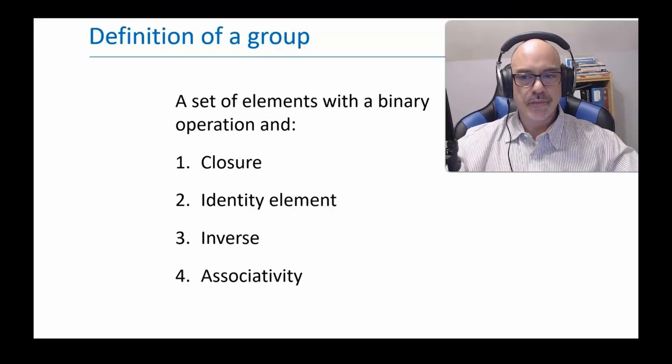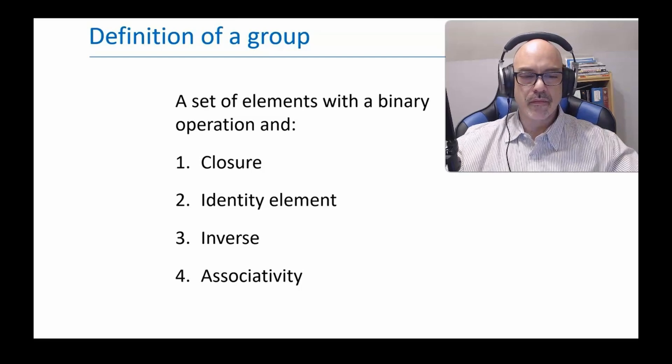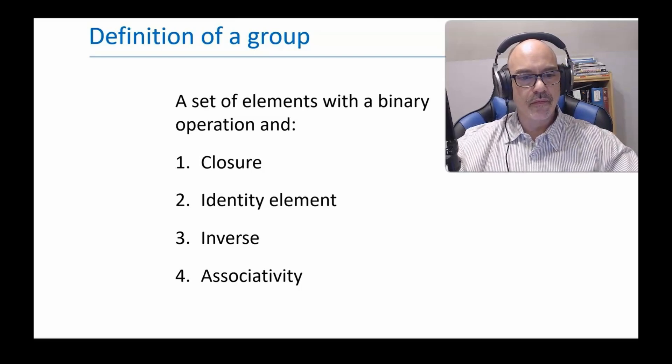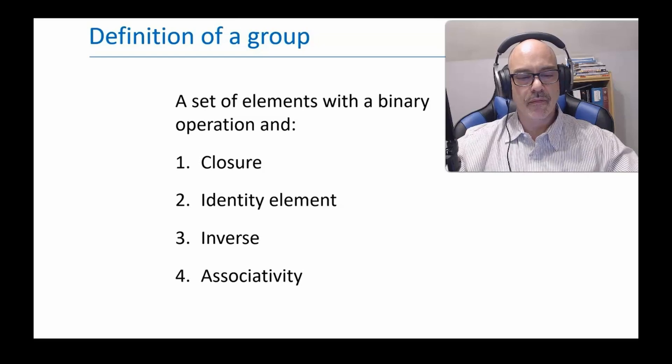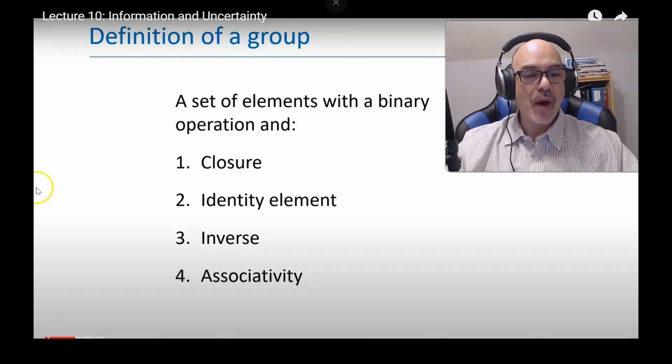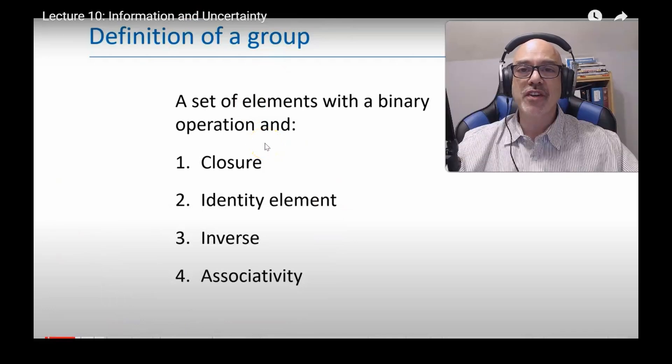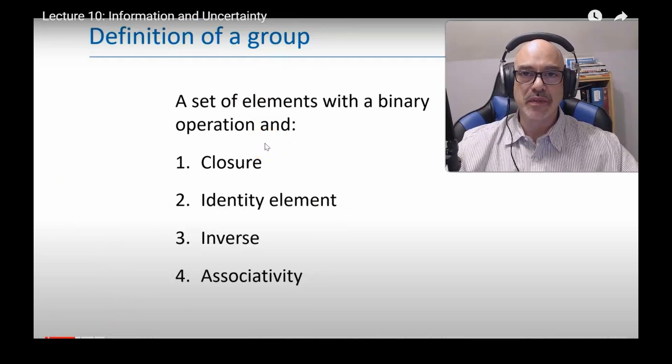Here is the definition of a group. A group is a set of elements with a binary operation and closure, an identity element, an inverse for every element, and associativity. Now with this definition, let's move on to an example so you can understand what it means and how it's used.